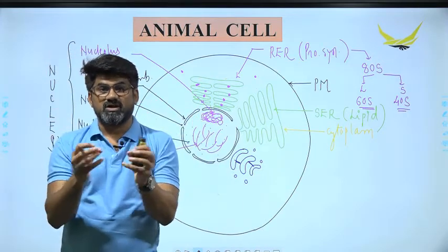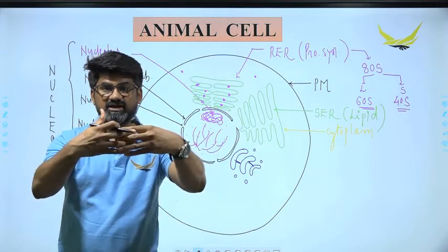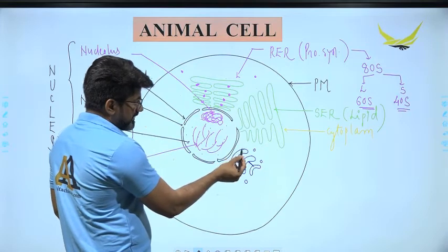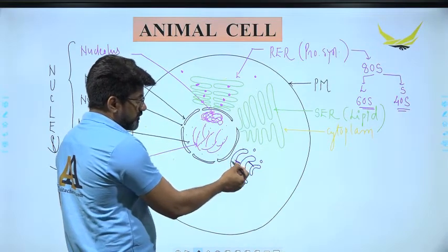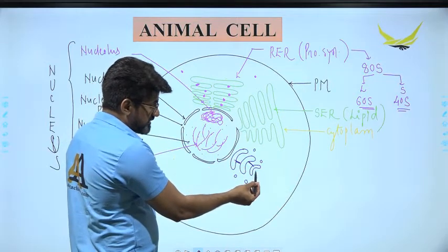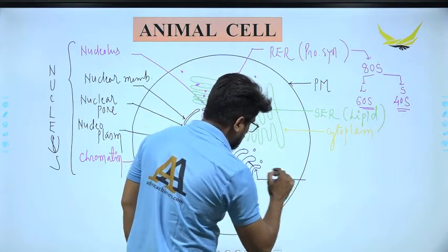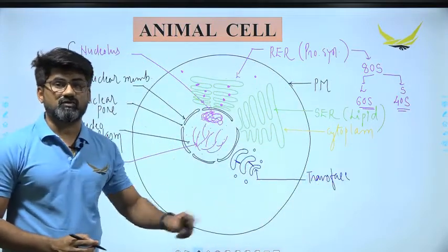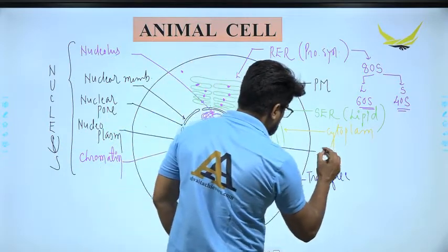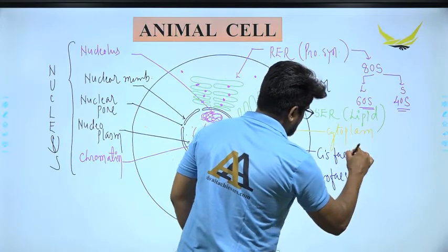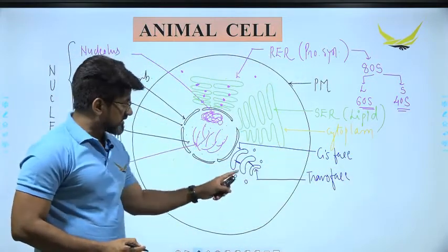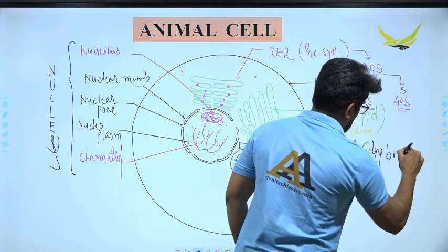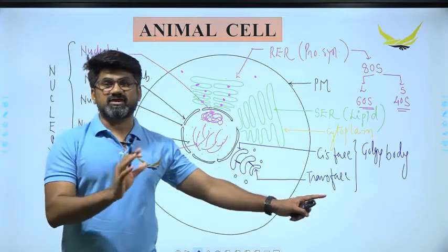The contents of the ER separate as small vesicles that fuse to become the cisternae of the Golgi body. In the Golgi body, the convex part that remains in contact with the nuclear membrane is the cis phase (immature face), and the concave part facing away is the trans phase (mature face). Together, these two phases form the complete Golgi body or Golgi complex.